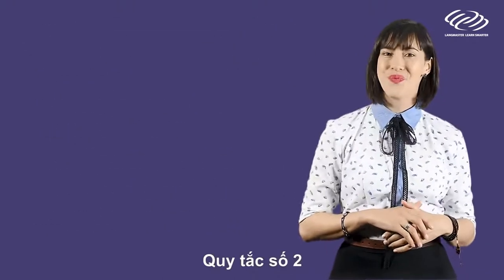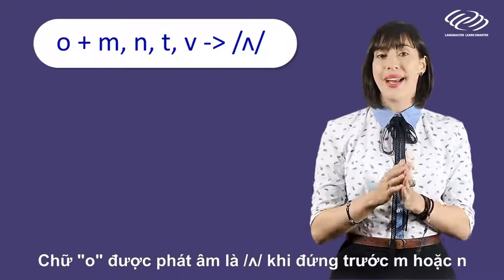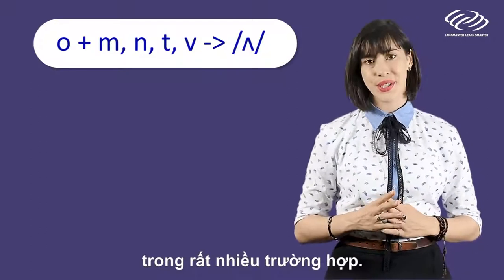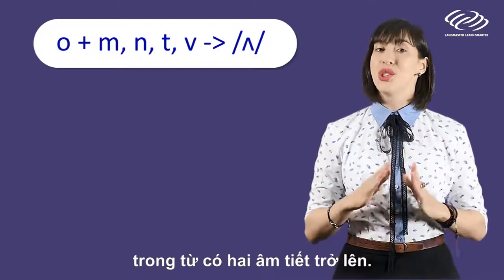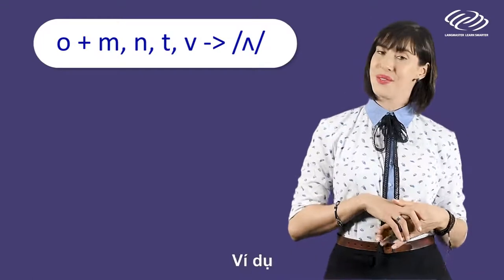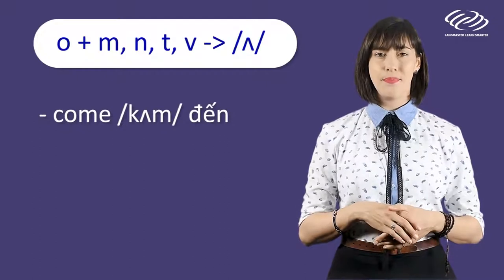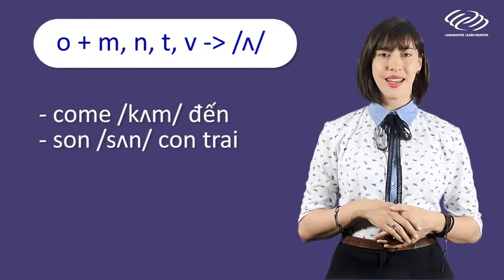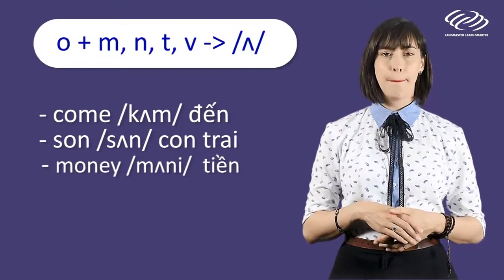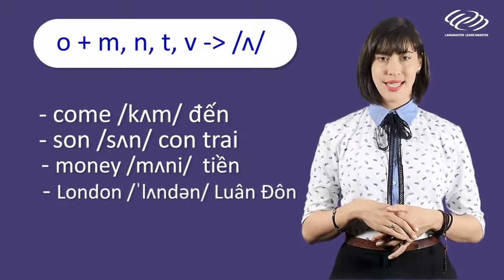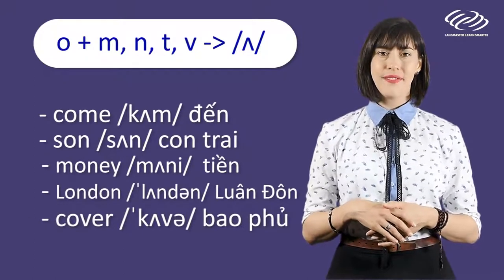Number two: O is pronounced as an AH sound when it is followed by M or N in many words, and when it comes before the M sound in words which contain two or more syllables. For example: come, sun, money, London, cover.